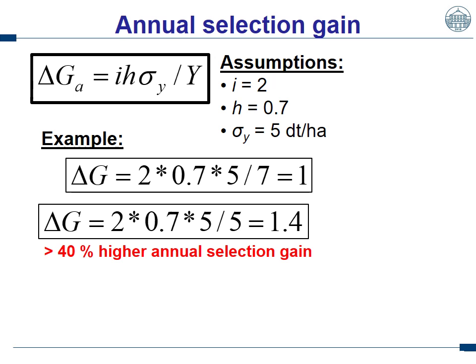Let's make a very easy example. Assume selection intensity equals 2, the square root of heritability equals 0.7 — which is quite close to reality for yield — and a standard deviation for grain yield of 5 decitons per hectare. For the phenotypic scheme: multiplying selection intensity by the square root of heritability by the standard deviation and dividing by 7 years gives an annual selection gain of 1. For the GS scheme, dividing by 5 years gives an annual selection gain of 1.4 — a 40% higher annual selection gain.